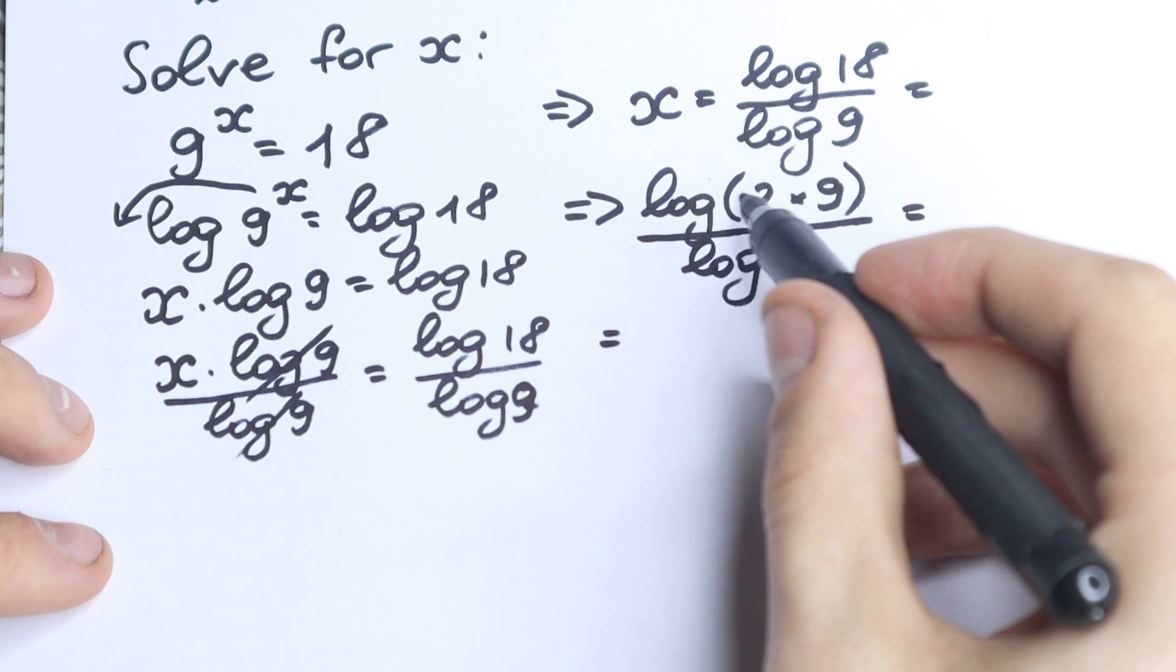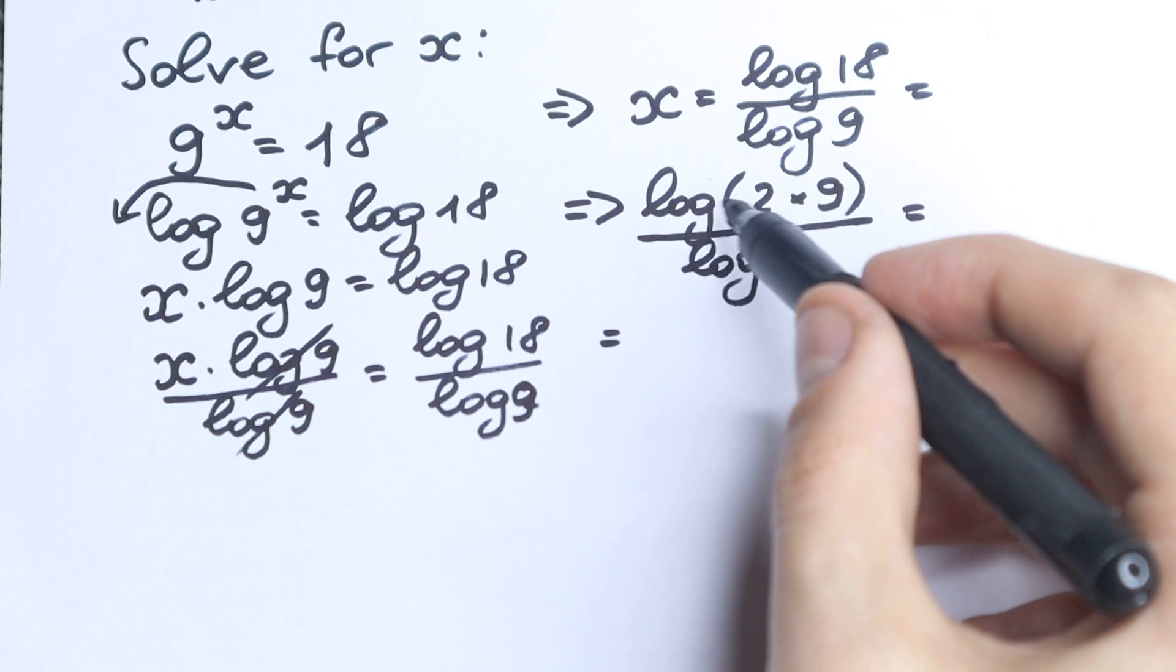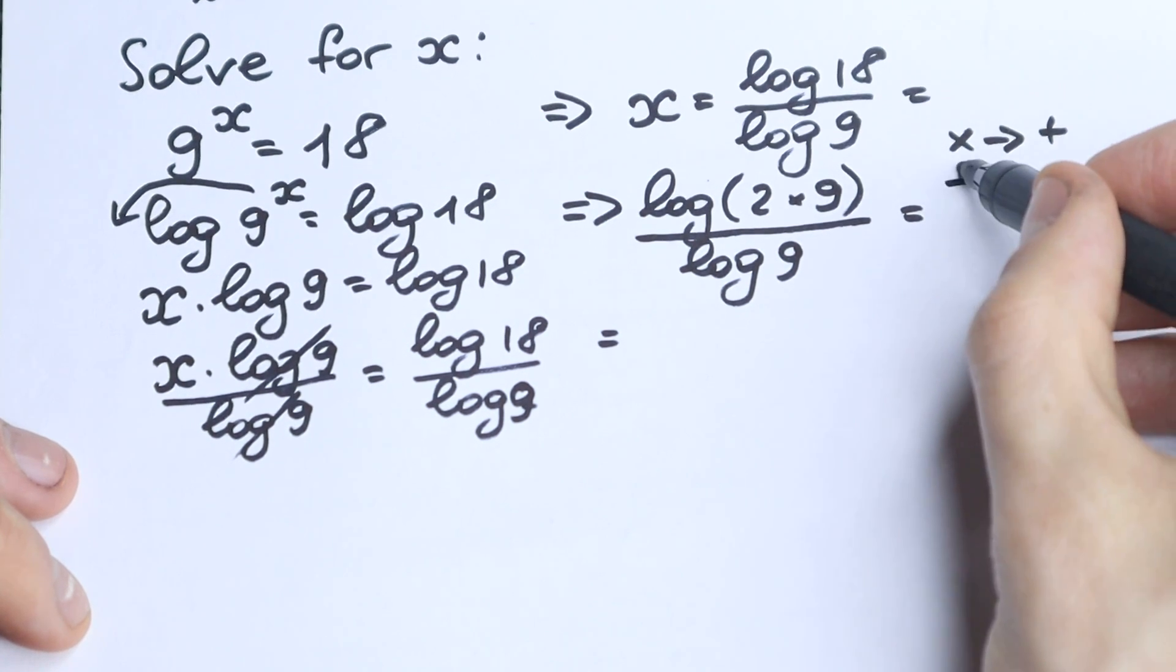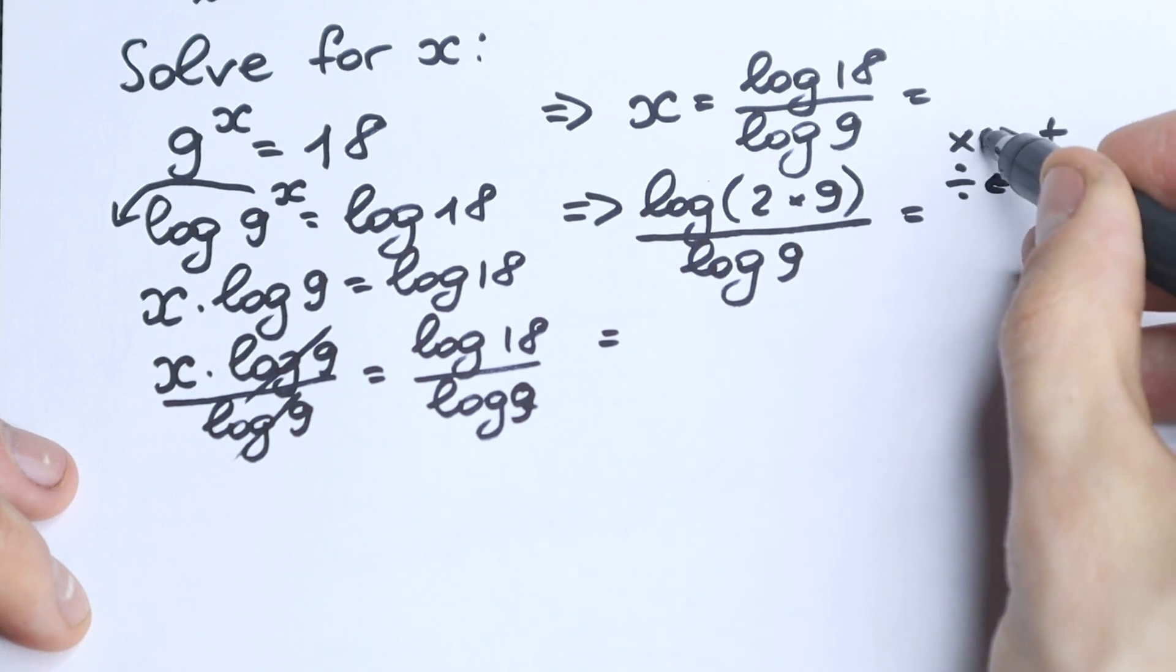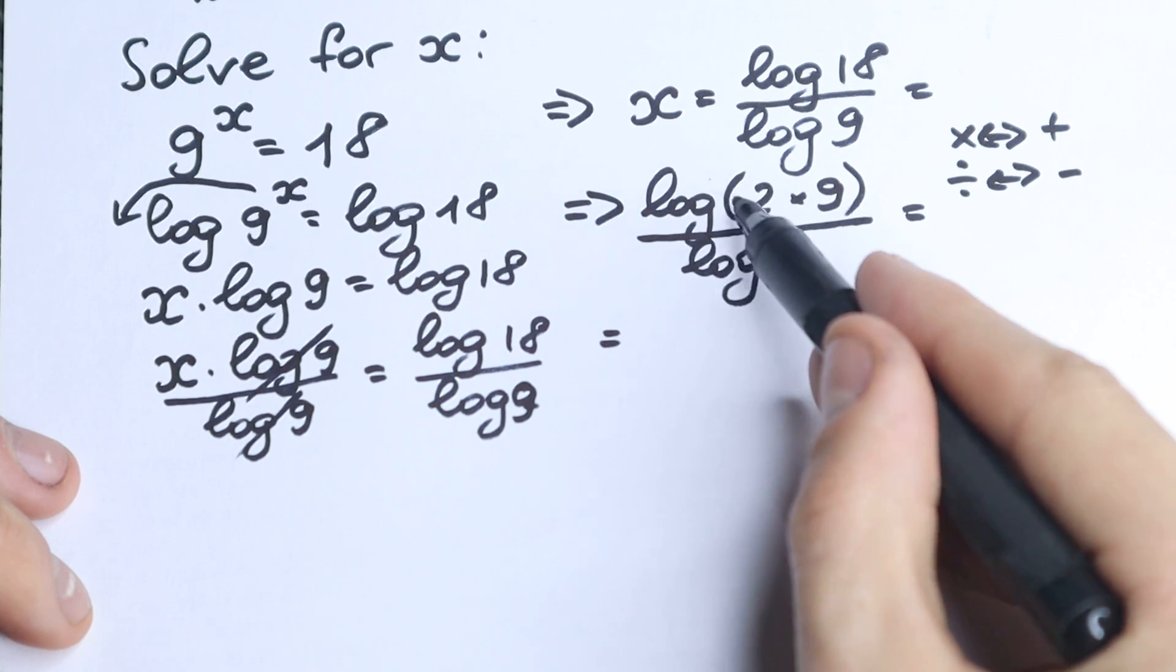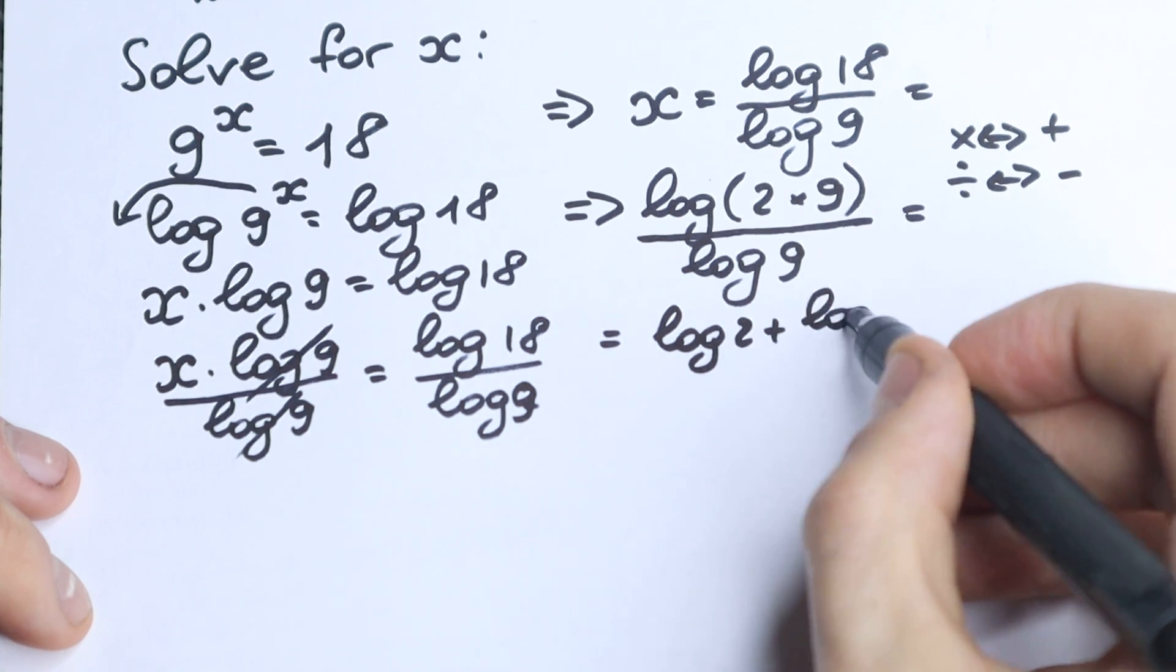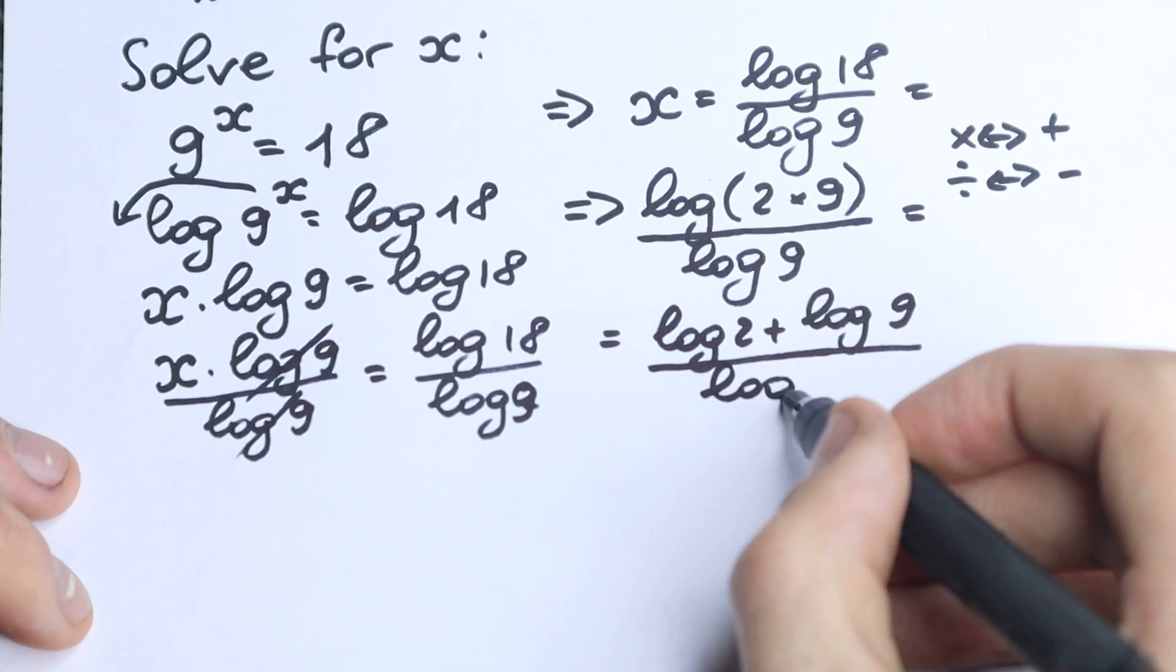So we have the log of a product. You need to know that if we have the log of a product, multiplication goes to addition. Division goes to subtraction, and in both ways. This is a rule with logarithms. Right here we have multiplication, so this is the sum of two logs. We have log(2) + log(9), all over log(9).